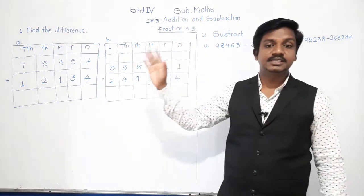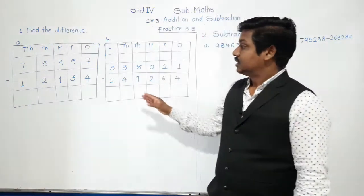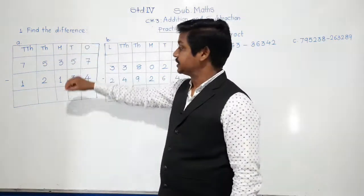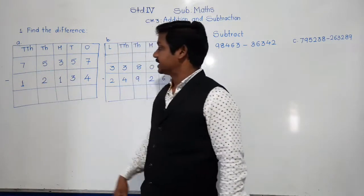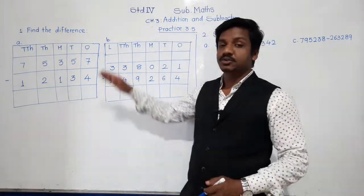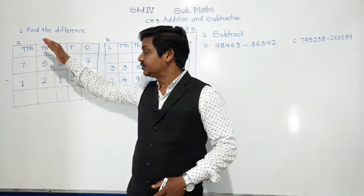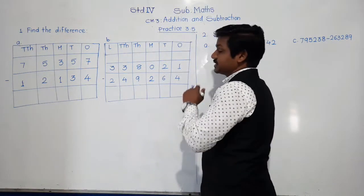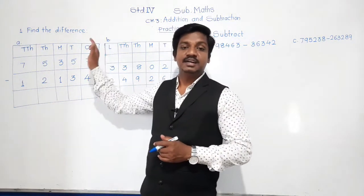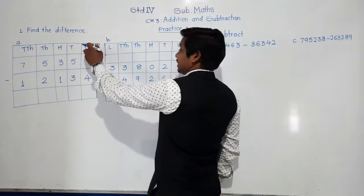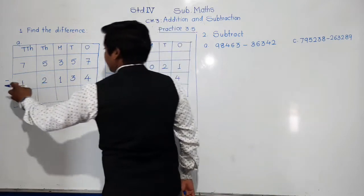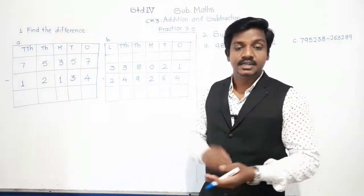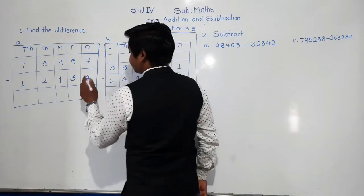Difference means nothing but subtraction. Now see here — this is a five-digit number. It is given in column form: 75,357 minus 12,134. Whenever we subtract, we write numbers in column form. While subtracting, from which side must we start? We should start from the ones place, that is from the right side. At ones place there is 7 minus 4. From seven, take away four — seven minus four equals three.